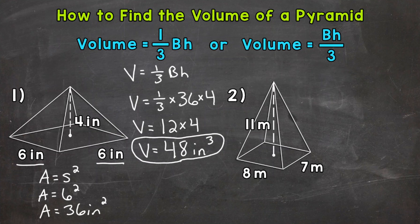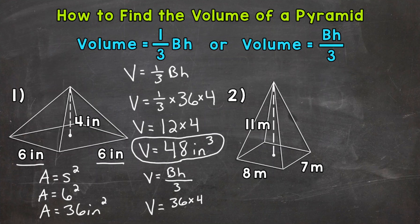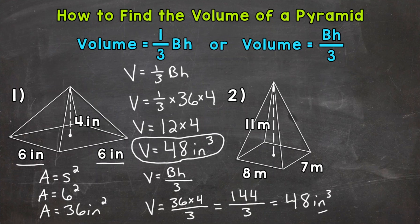I want to show you what the other formula looks like for number 1 as well: area of the base times the height, then divide by 3. So volume equals the area of the base times the height divided by 3. Plugging in: 36 times 4 divided by 3. Going to the side to solve: 36 times 4 gives us 144, divided by 3 gives us a final answer of 48 cubic inches. So we get the same answer either way — multiplying by 1 third is the same as dividing by 3.